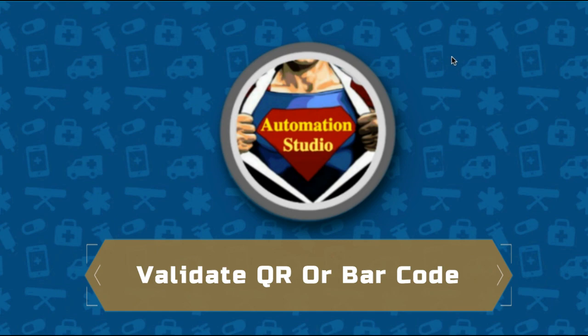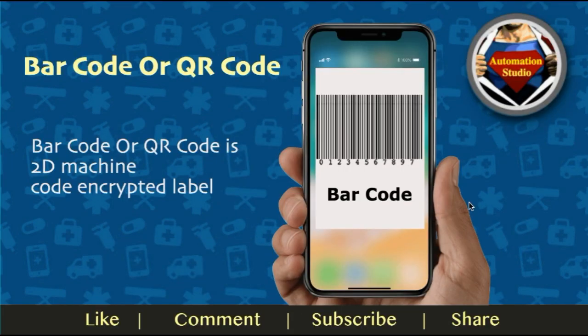In most situations your app can consist of a barcode or QR code — it will generate the QR code or barcode and you need to validate whether it's generated correctly or not. So firstly we are going to see what a barcode is, what a QR code is, and how we can decode them.